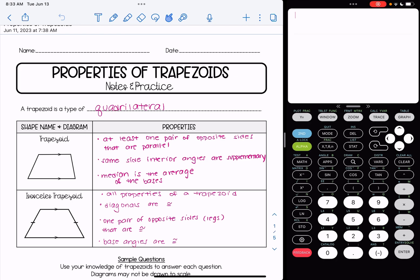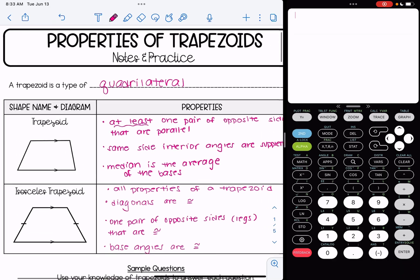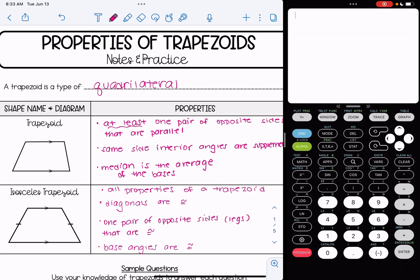They have at least one pair of opposite sides that are parallel. Depending what state you live in and what curriculum your state follows, your curriculum might not include this 'at least' part. But here in New York, which is where I teach, we follow that definition. So at least one pair of opposite sides are parallel.